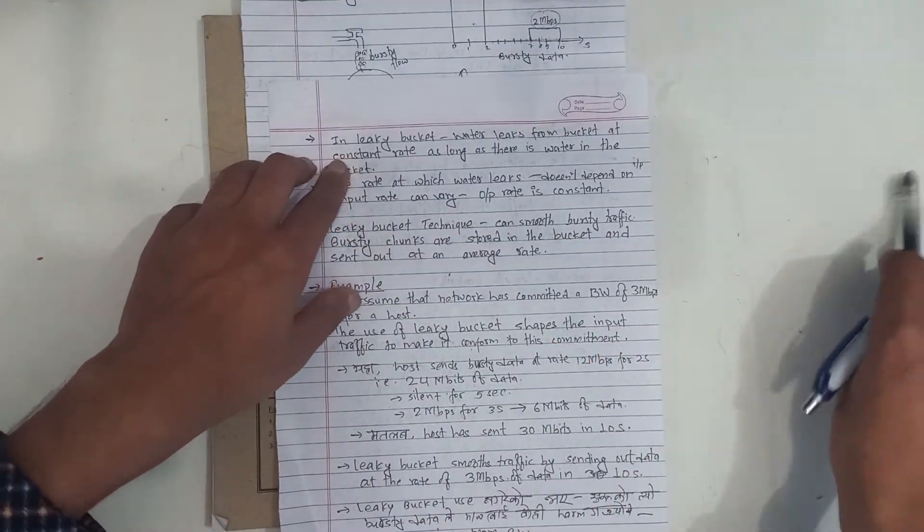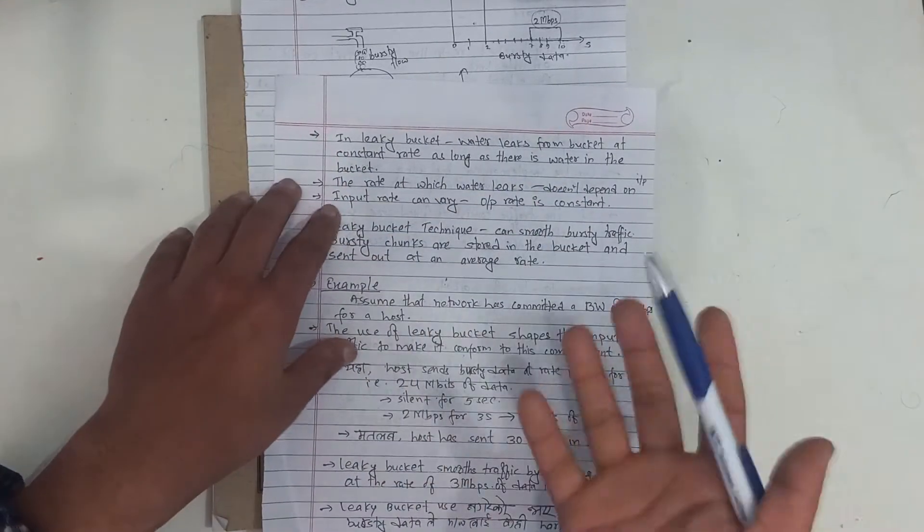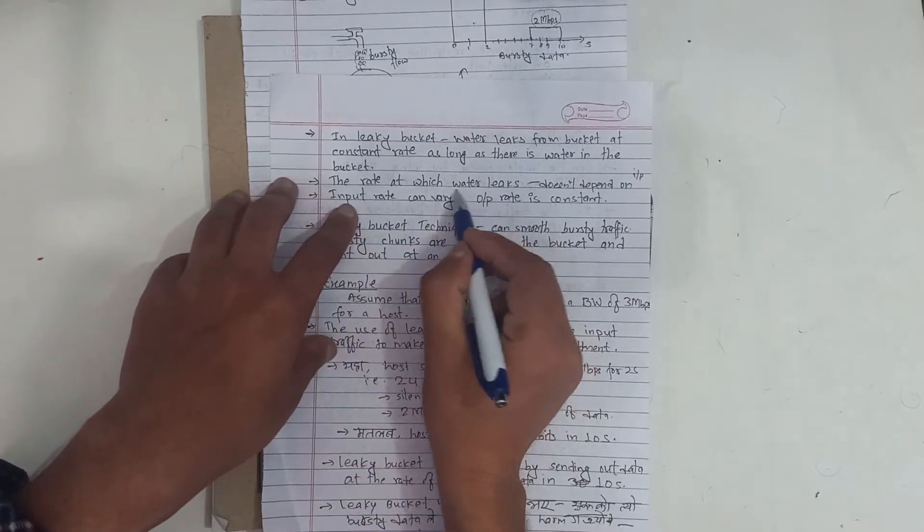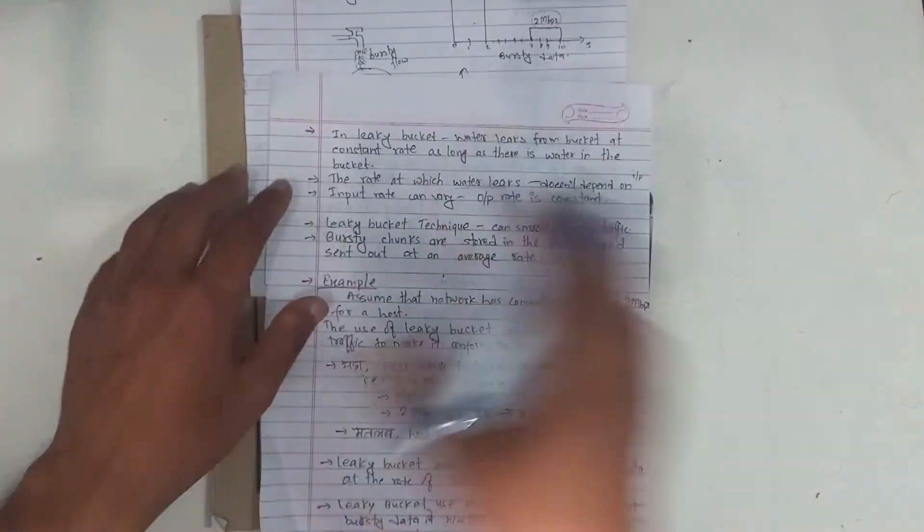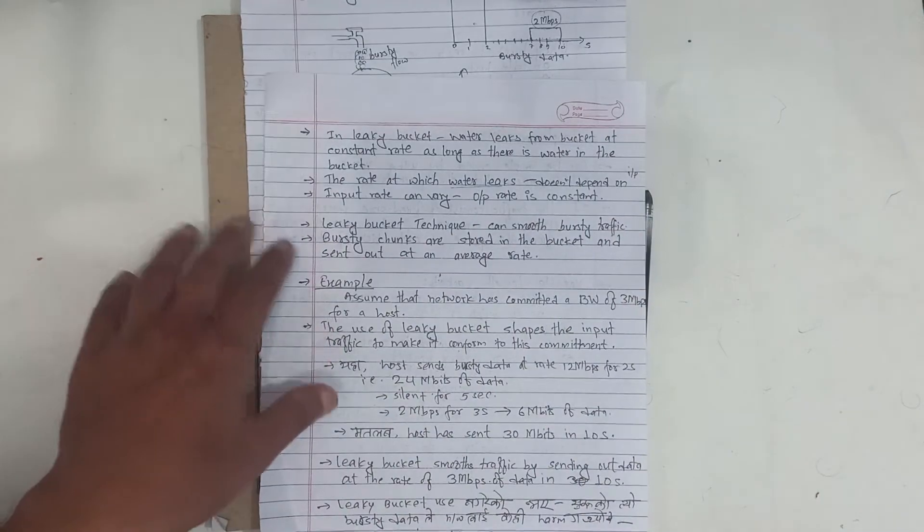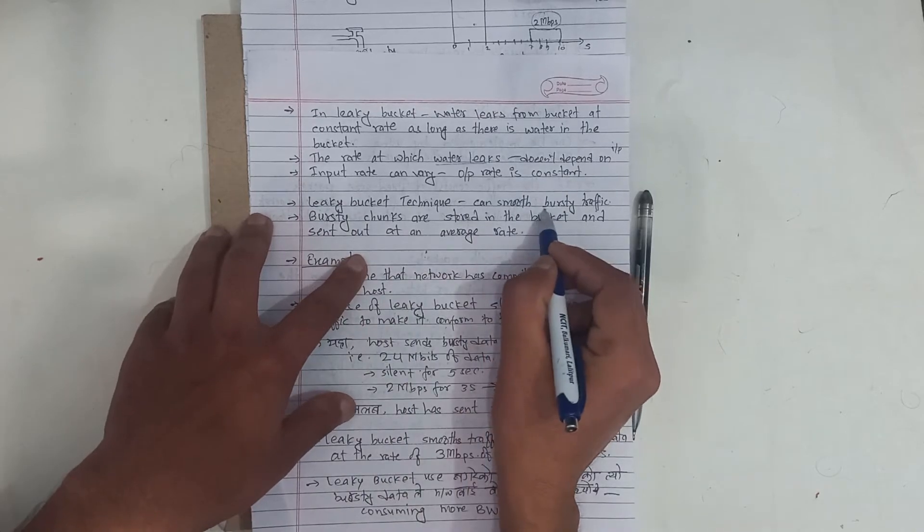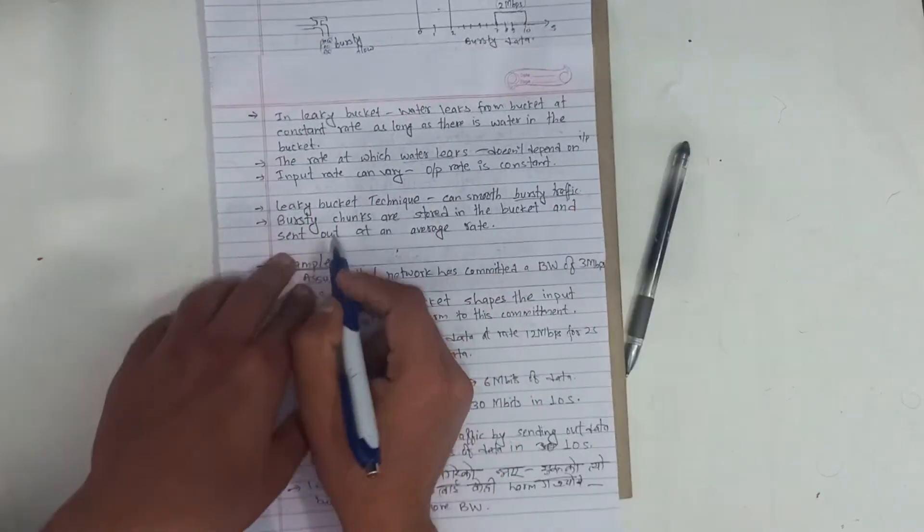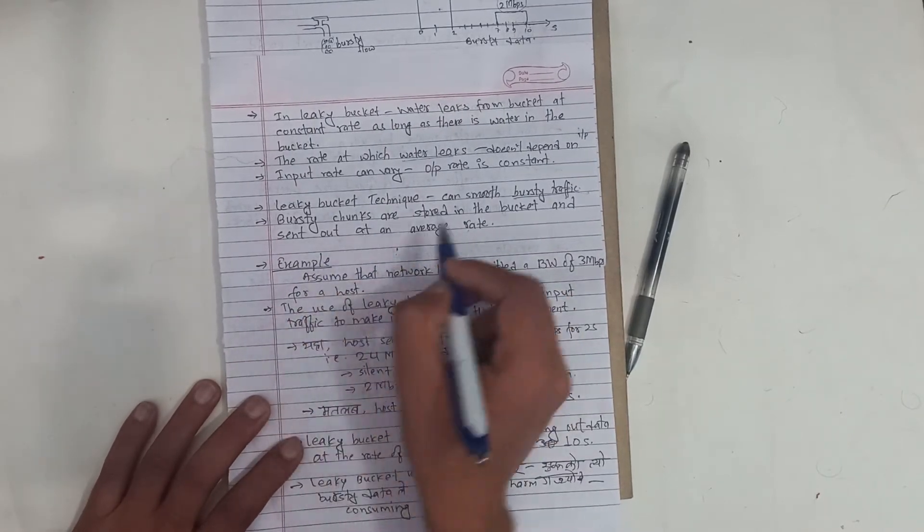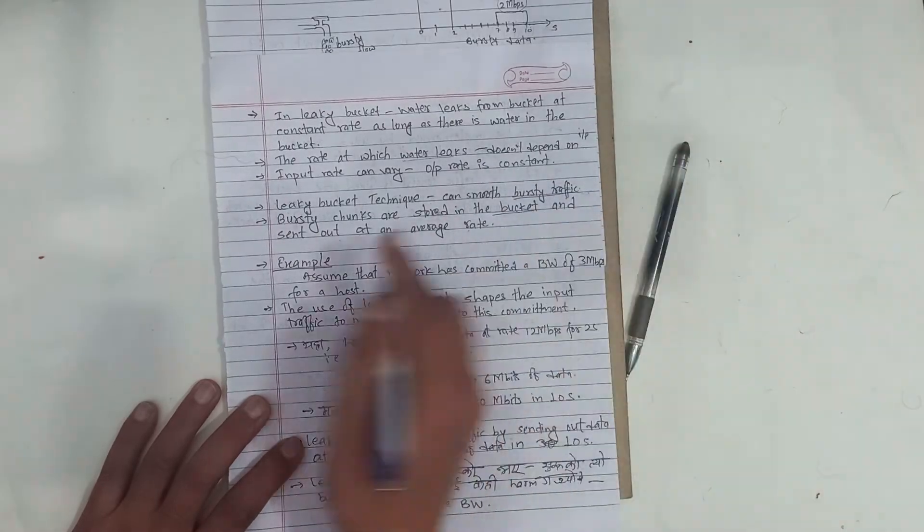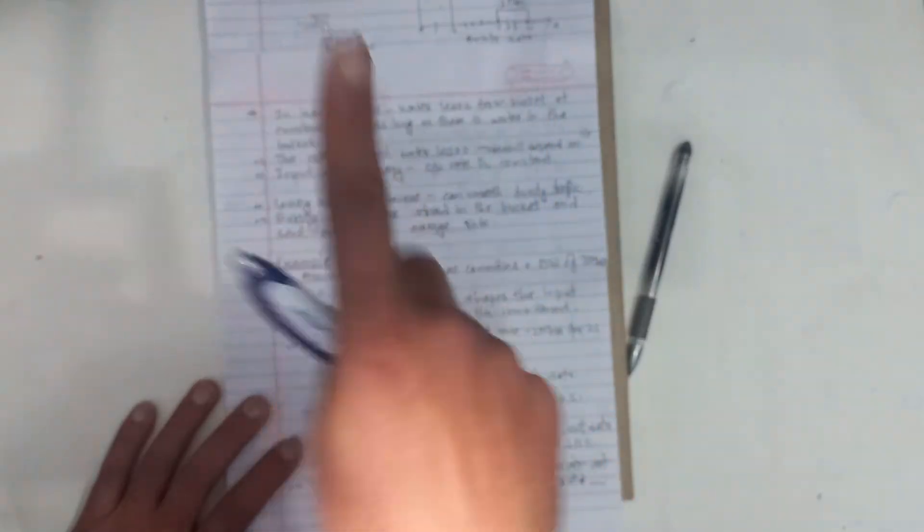In the leaky bucket, water leaks from the bucket at constant rate. As long as there is water in the bucket, the rate at which water leaks does not depend on input rate. The leaky bucket technique can smooth bursty traffic. Burst chunks are stored in the bucket and sent out at an average rate. Therefore, the burst is also transmitted at a constant rate.